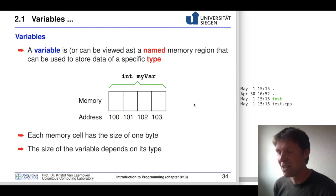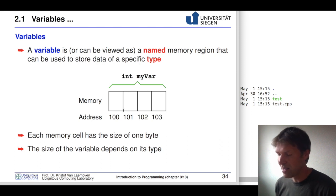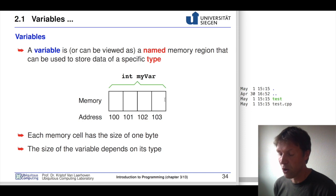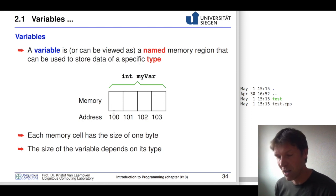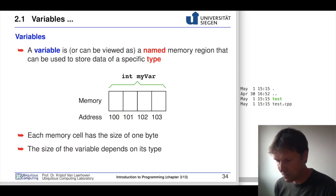Secondary is that this memory is limited. So if you have a really big number and you add a little bit to it, you might not be able to represent it in four bytes anymore. Then you'll have something called an overflow. But more about that later.